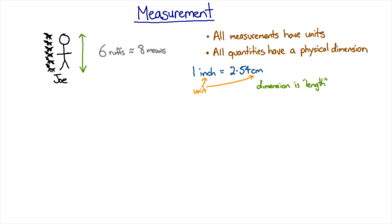Now the first thing we're going to go through is the uncertainties in your measurements. You might recall that Joe measured his height as being six roughs, the height of six Scottish Terriers.